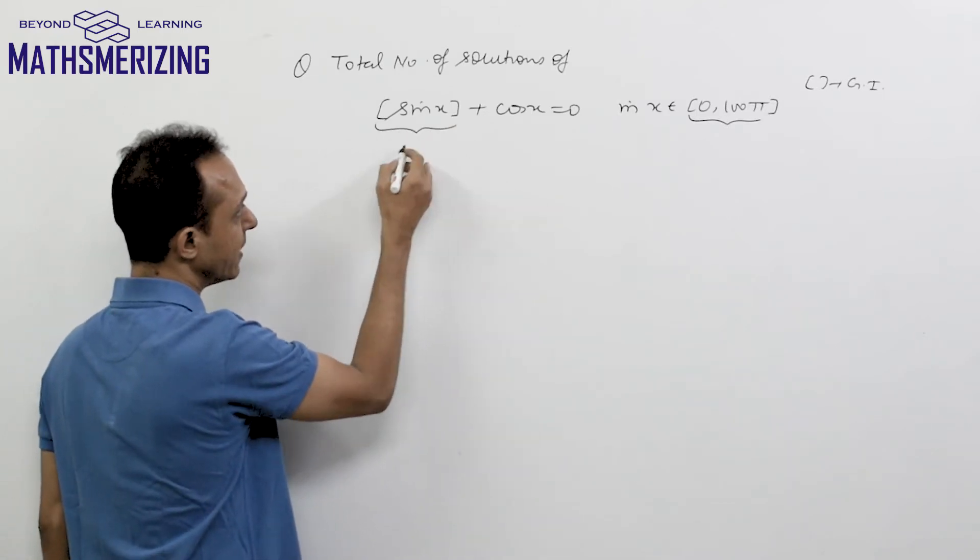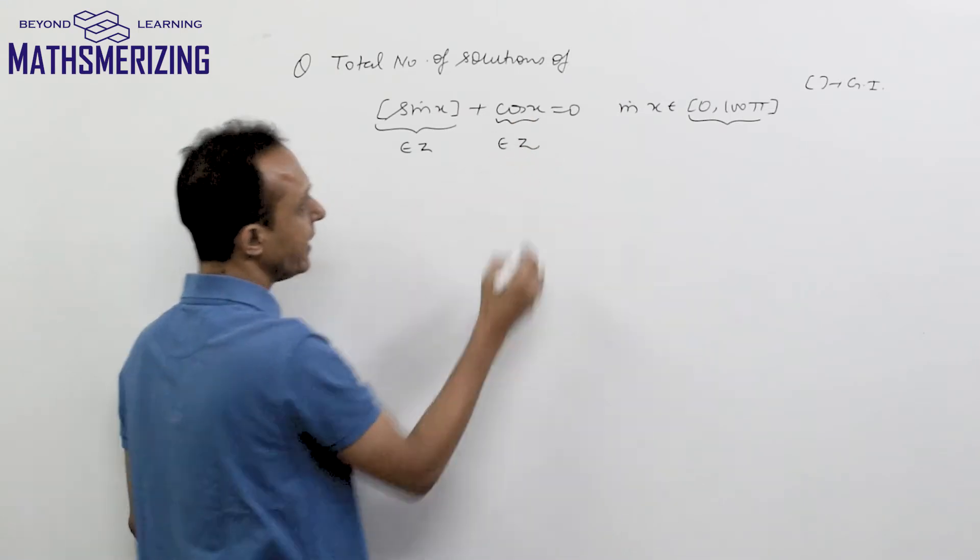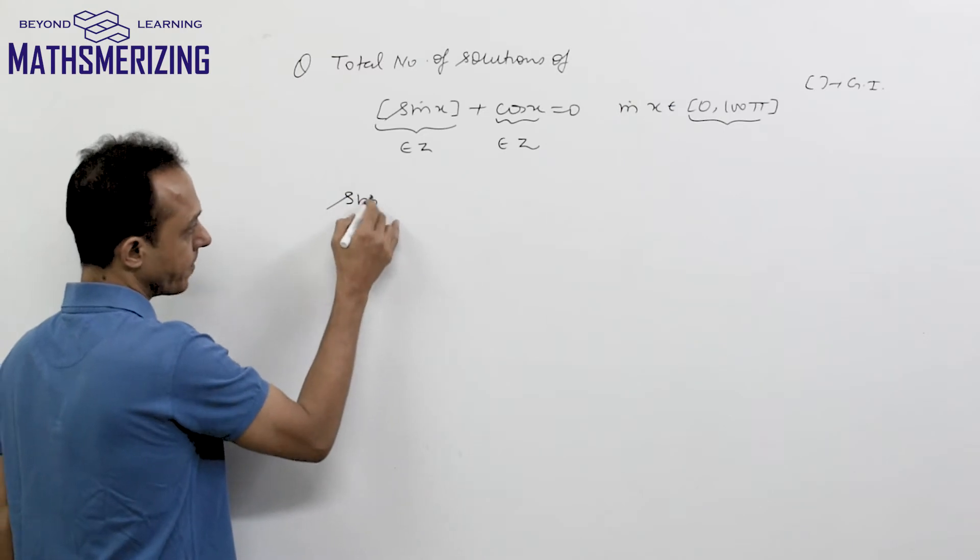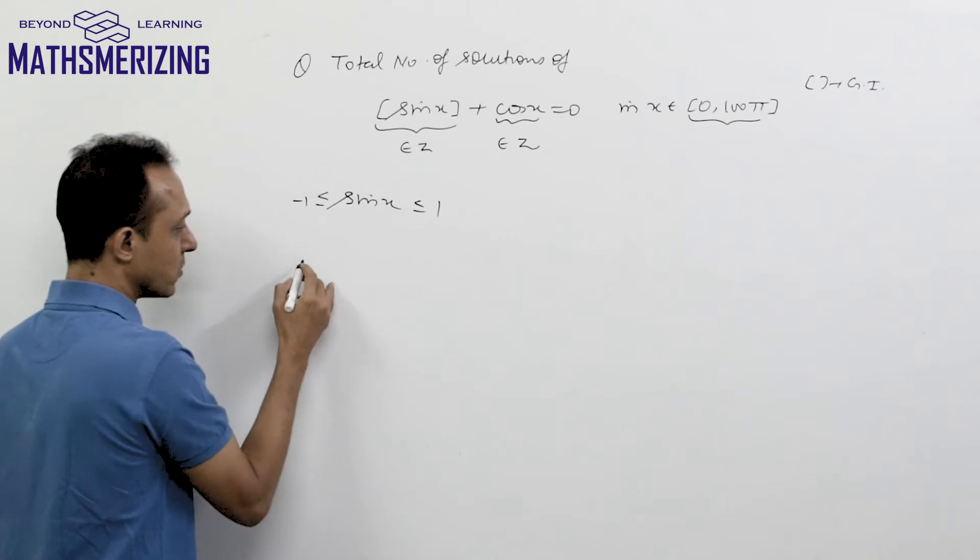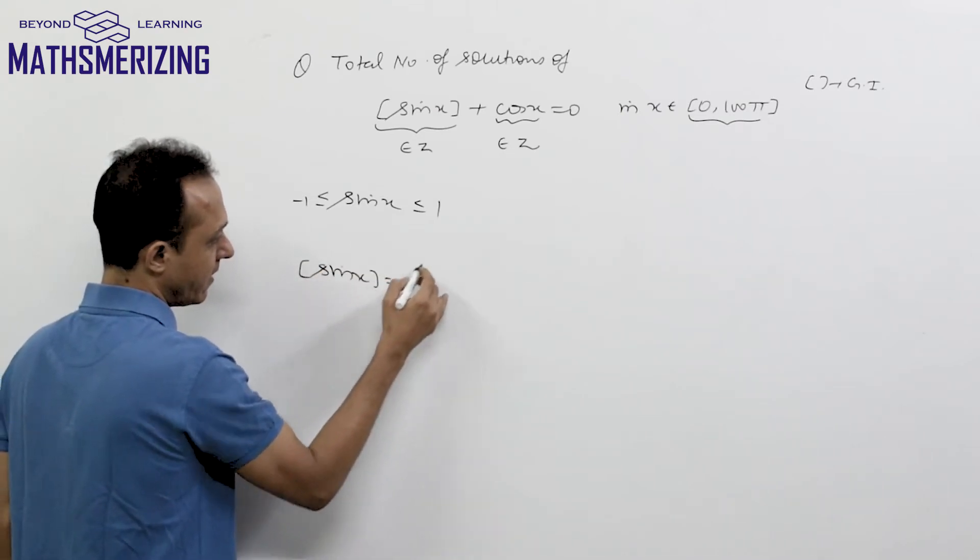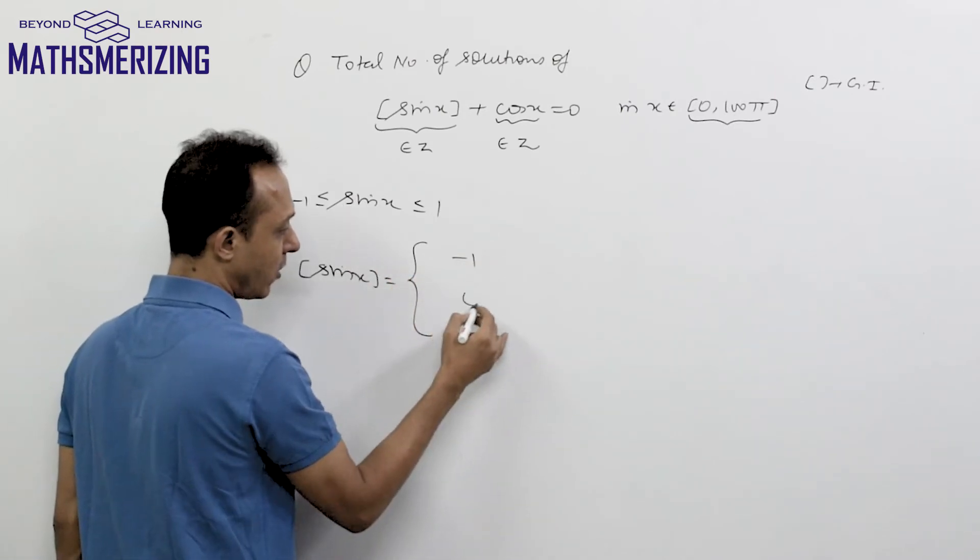Now, any greatest integer function is nothing but an integer, so this means [sin x] should also be an integer. The value of sin x lies between -1 and +1, so [sin x] has only three possible integral values: either -1, 0, or +1.